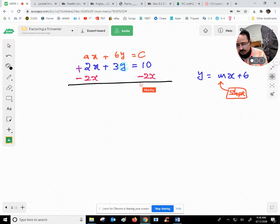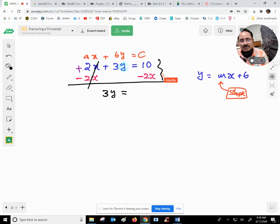When you take 2x and negative 2x gets cancelled, 3y equals to, what is 10 minus 2x?